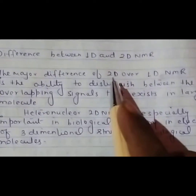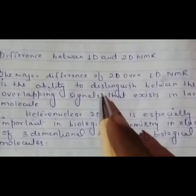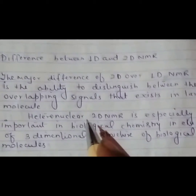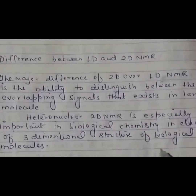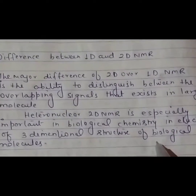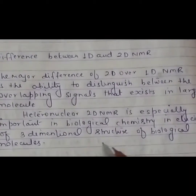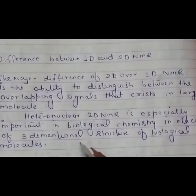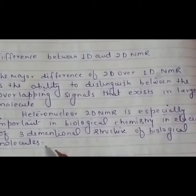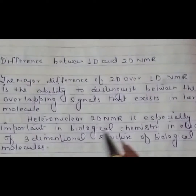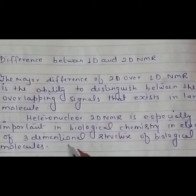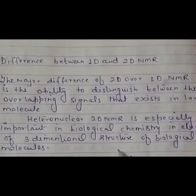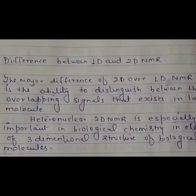In 2D NMR, these signals appear in a much clearer way and can be properly determined. Another form of 2D NMR is heteronuclear 2D NMR, which is especially important in biological chemistry for the elucidation of the 3D structure of biological molecules, particularly macromolecules such as proteins, lipids, and carbohydrates.